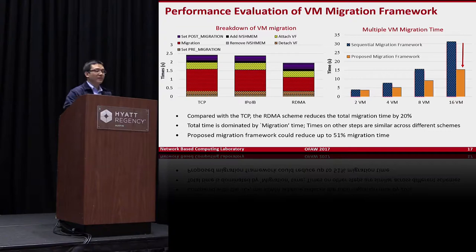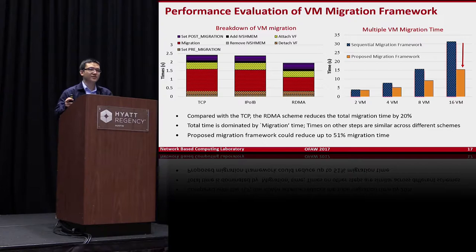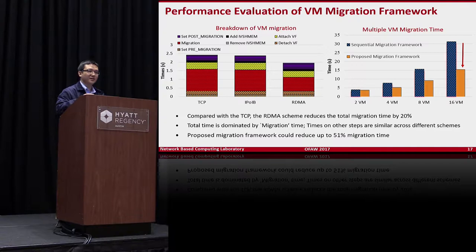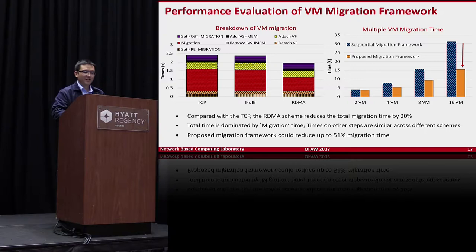Regarding migration performance: one major bottleneck is the memory copy time from one node to another. You can use TCP/IP, IP over IB, or an RDMA-based approach. With RDMA, you achieve very good performance. Additionally, using pipelining in our framework, compared with sequential migration (one VM at a time), our approach improves performance by about 50% — a very good result when migrating many virtual machines, e.g., 16 VMs.